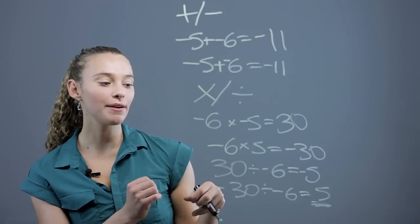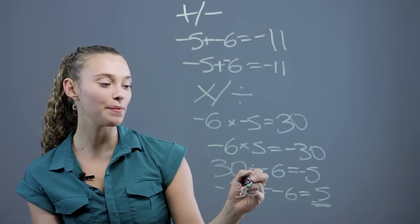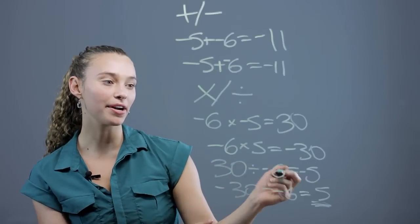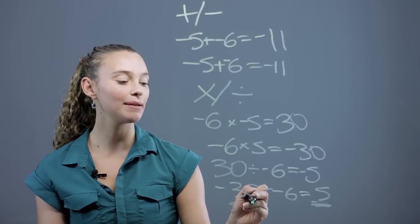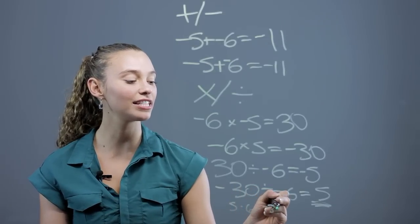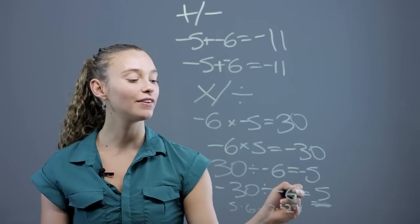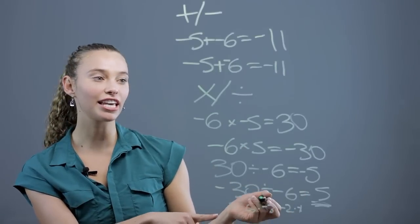When they're doing more complicated problems with more numbers like 5 times 6 times negative 3 times negative 2 times negative 1, then it gets a little more tricky.